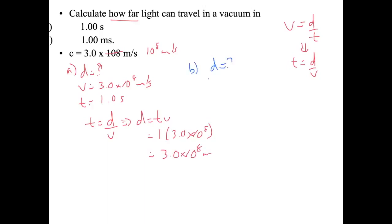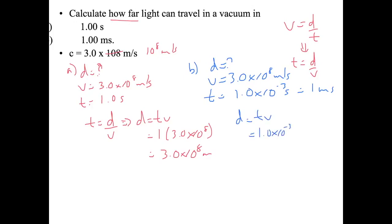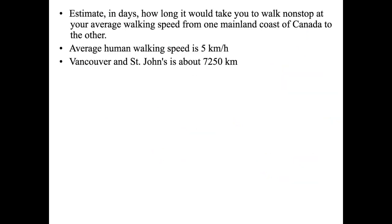For part (b), velocity is still 3.0 times 10 to the 8 meters per second, but now time is 1.0 times 10 to the negative 3 seconds, which equals 1 millisecond. Distance equals t times v, so 1.0 times 10 to the negative 3 seconds times 3.0 times 10 to the 8 meters per second. The seconds cancel and we get 3.0 times 10 to the 5 meters.